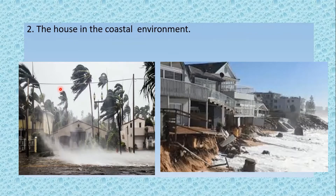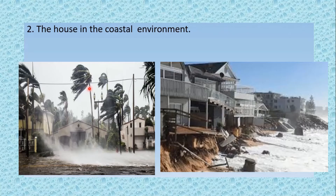The second one: the house in the coastal environment. Here you can see houses which are very close to the sea. People who live in these houses have to face a lot of problems such as sea erosion, dryness, and the tsunami.